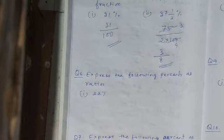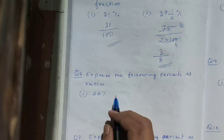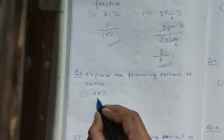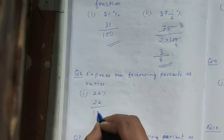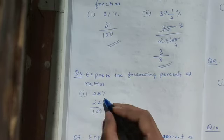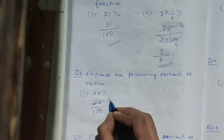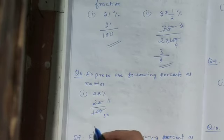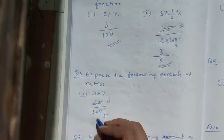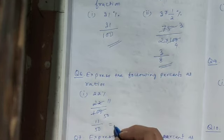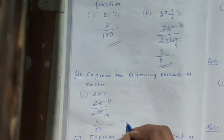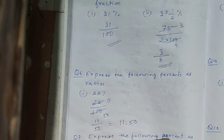Question number 6: express the following percent as ratios. For 22 percent, we write 22 by 100 — same process, percent divided by 100. We get 211 over 250 after noting the values, then cancel to get 11 by 50. We write down 11 is to 50. That's it.